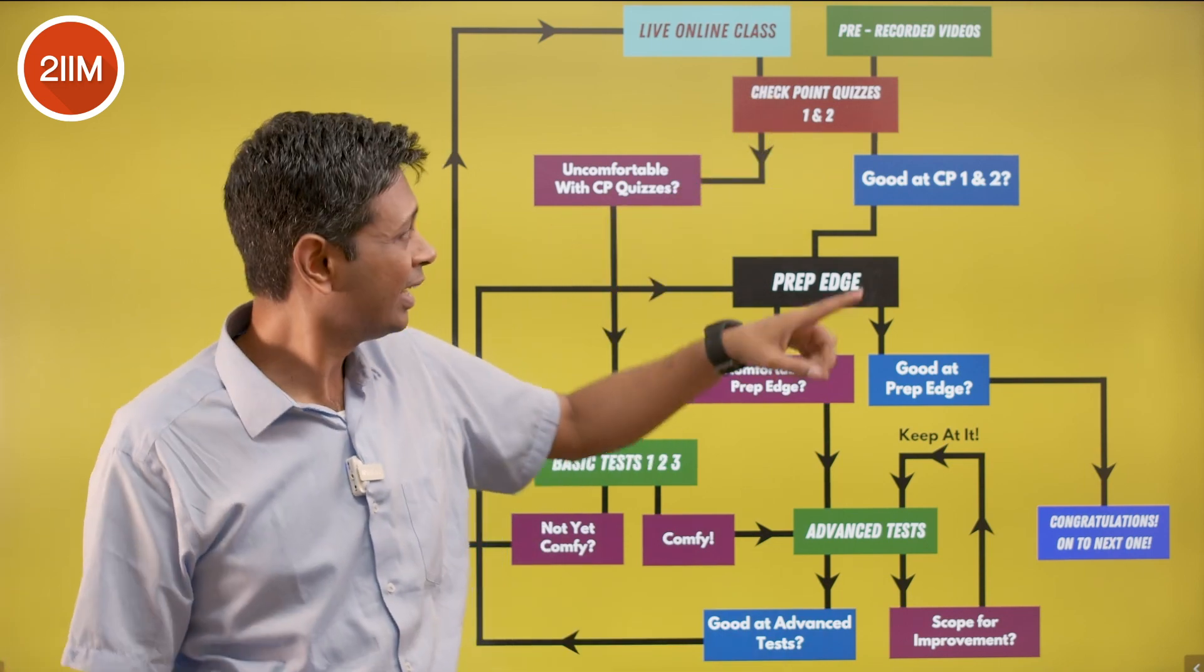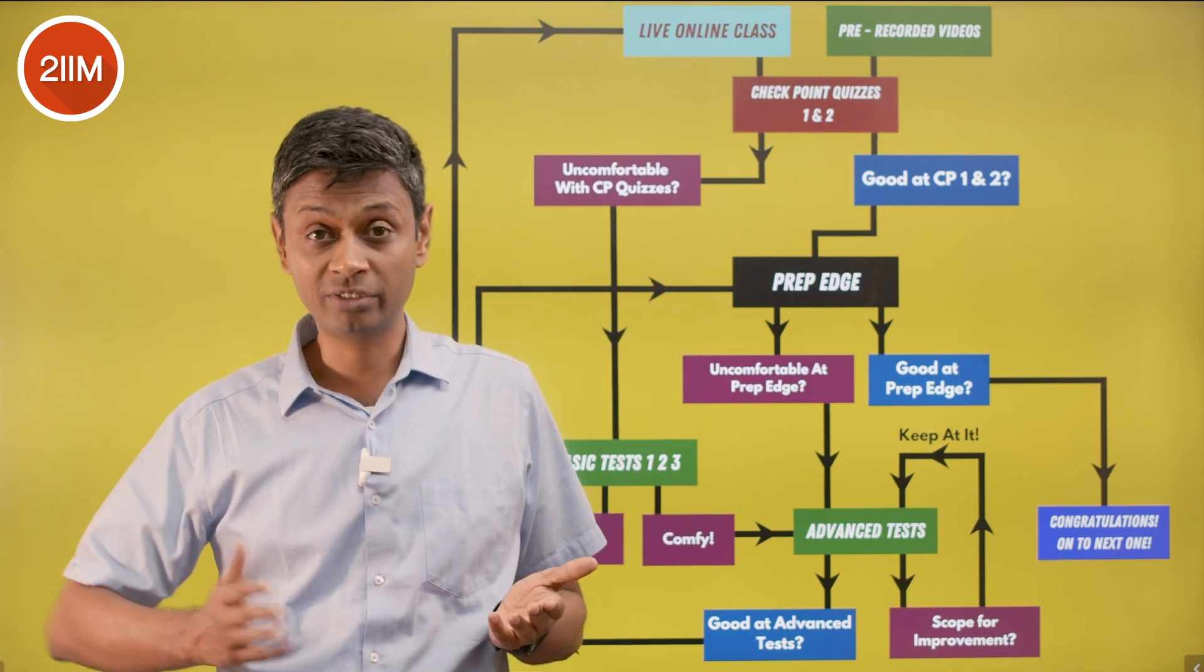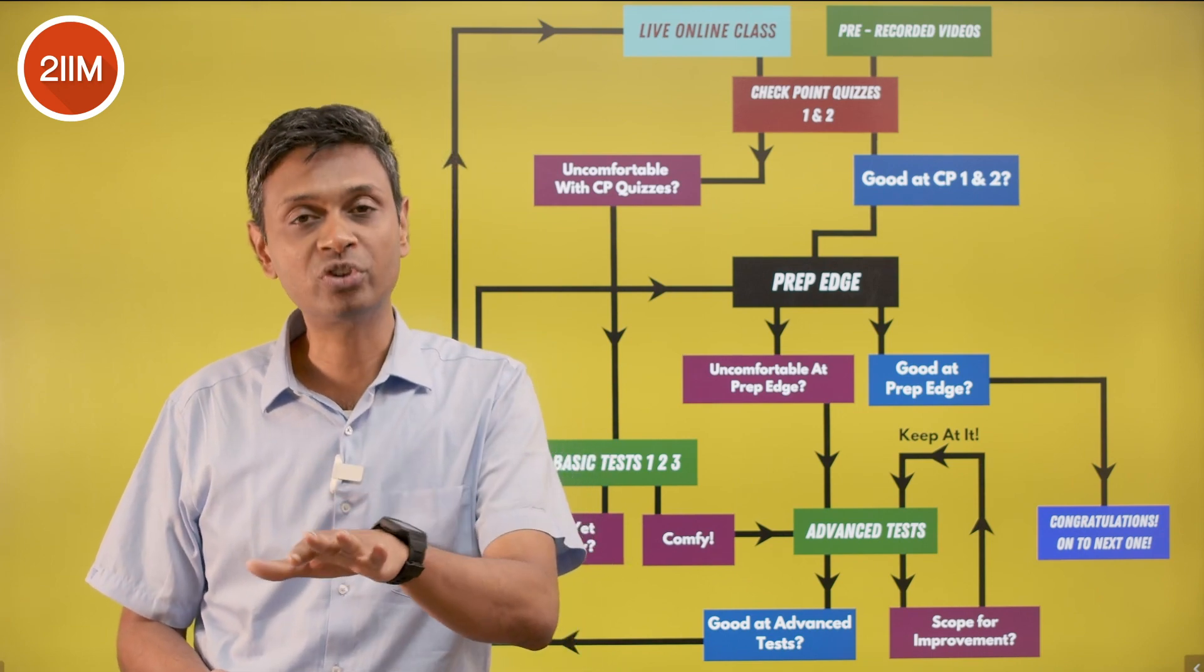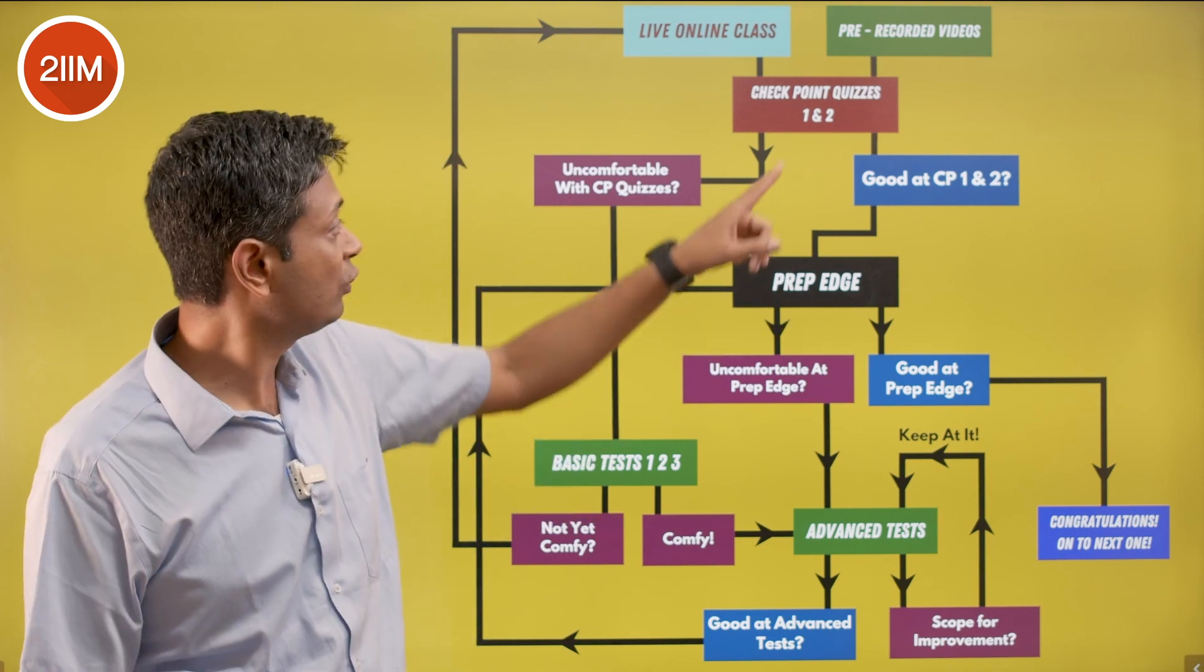When you finish a topic, you hit checkpoint quiz one, checkpoint quiz two - they're good at this. You get the feeling: I can do this. There's six questions, I've got five right. In checkpoint two, I've got four right - the other two were silly mistakes but I've got the fundamentals. Then move to prep edge.